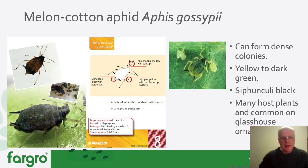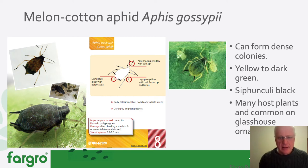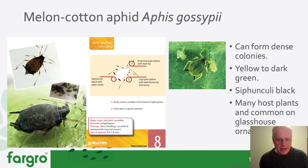The Melanchotten aphid is another example. This is a very matte-coloured species, not shiny, and variable in colour — yellow to dark green, thankfully not black. It has many host plants and is common on glasshouse ornamentals. The images here on the left come from the Belchim guide to aphids, which covers a range of arable crops but also mentions cucurbits and ornamentals. Of course, with all of these aphids we are concerned about aphid-transmitted viruses.